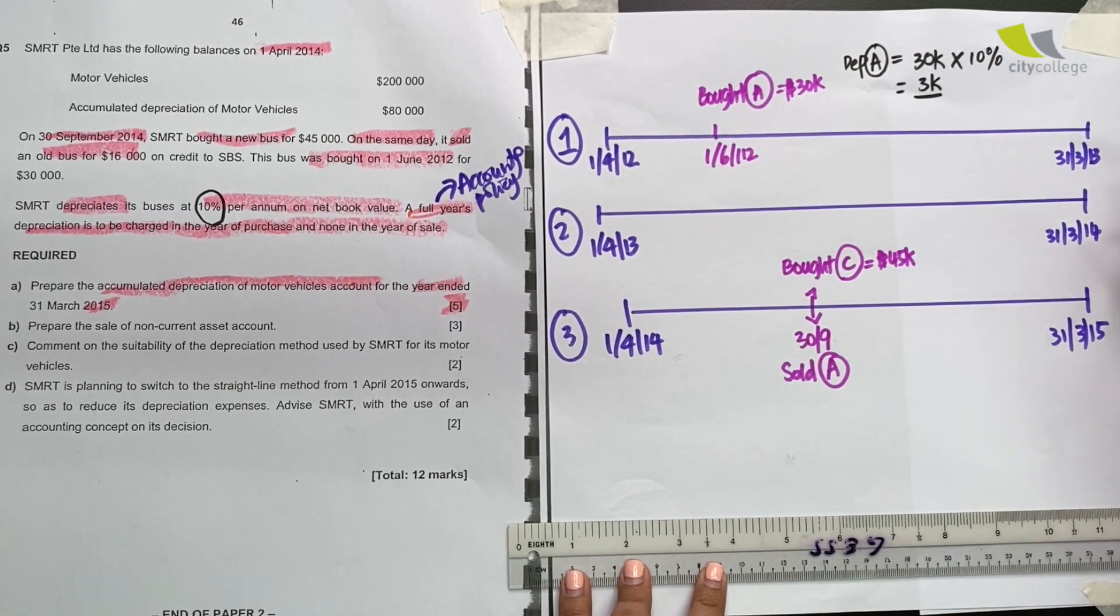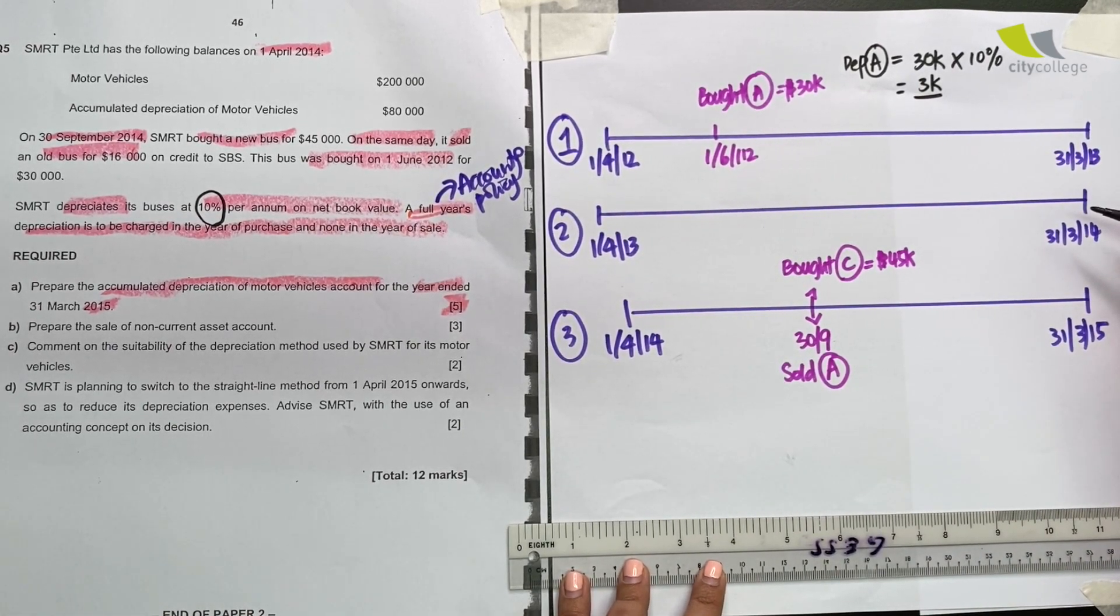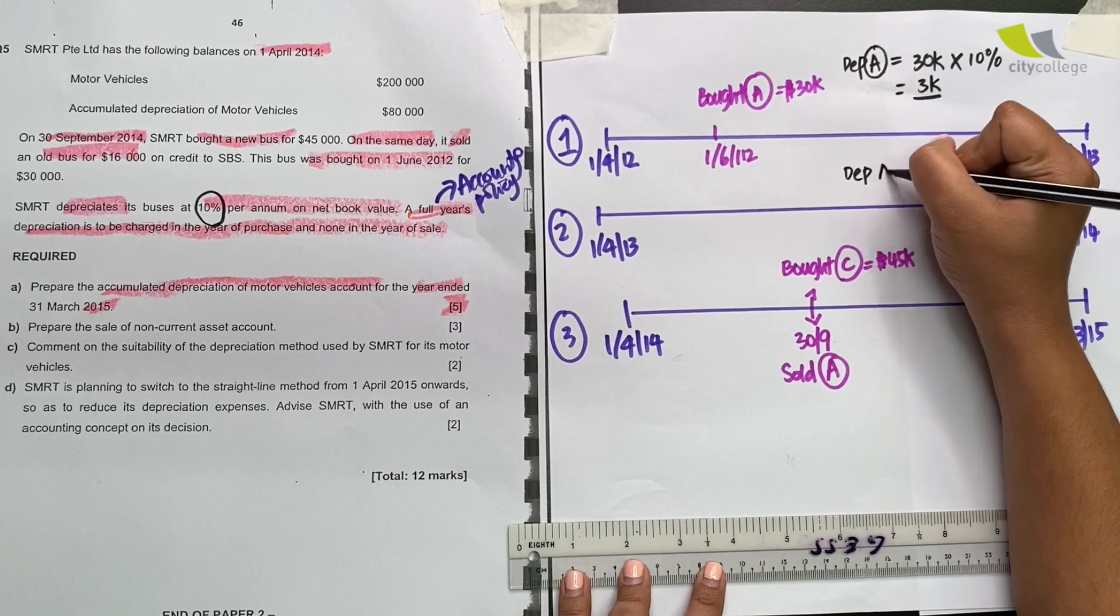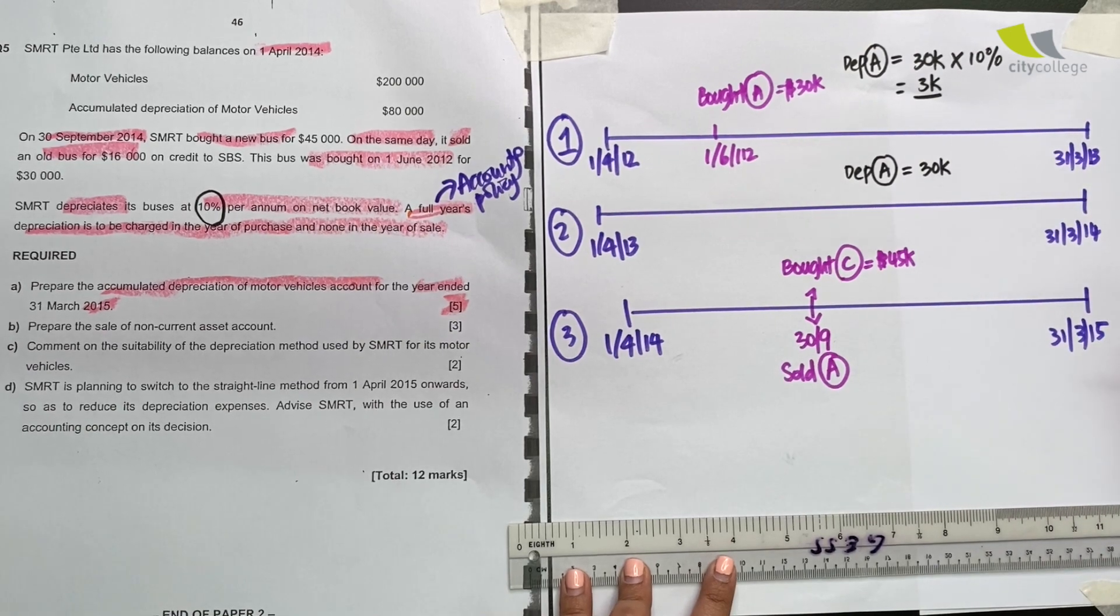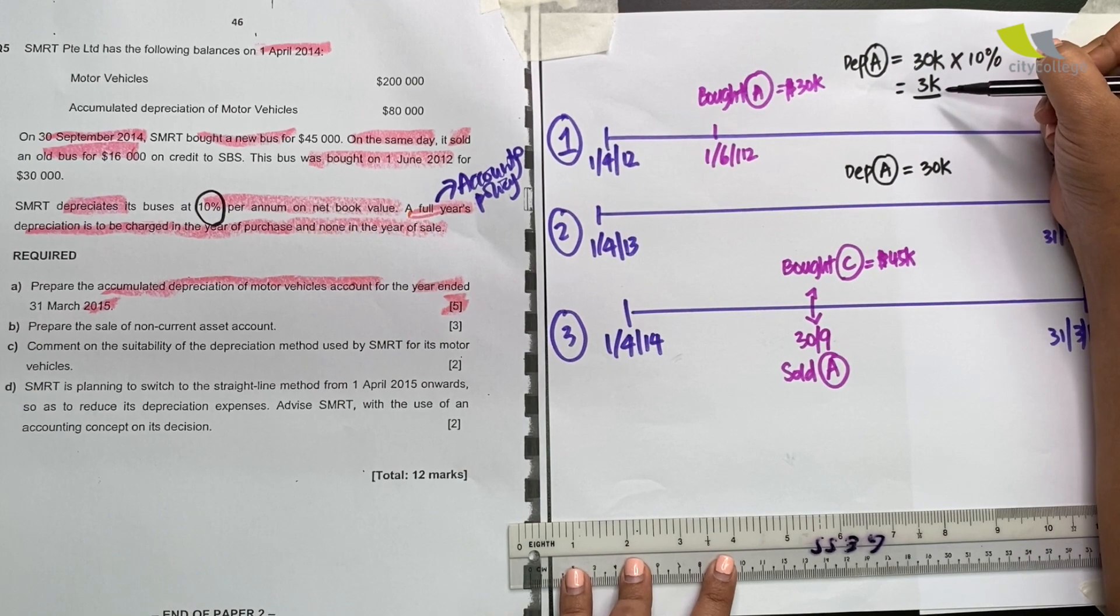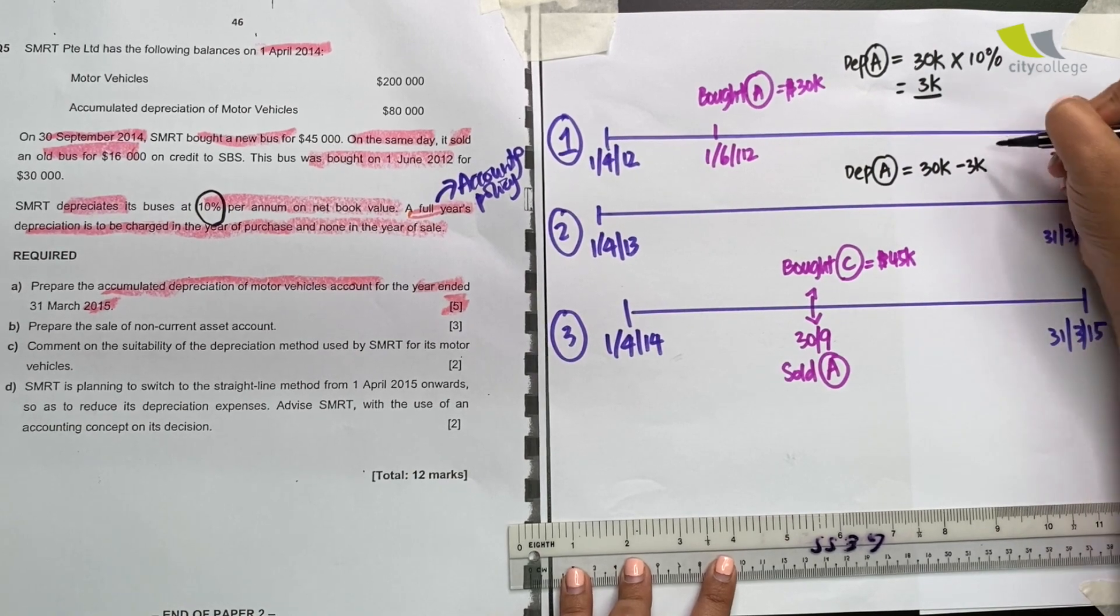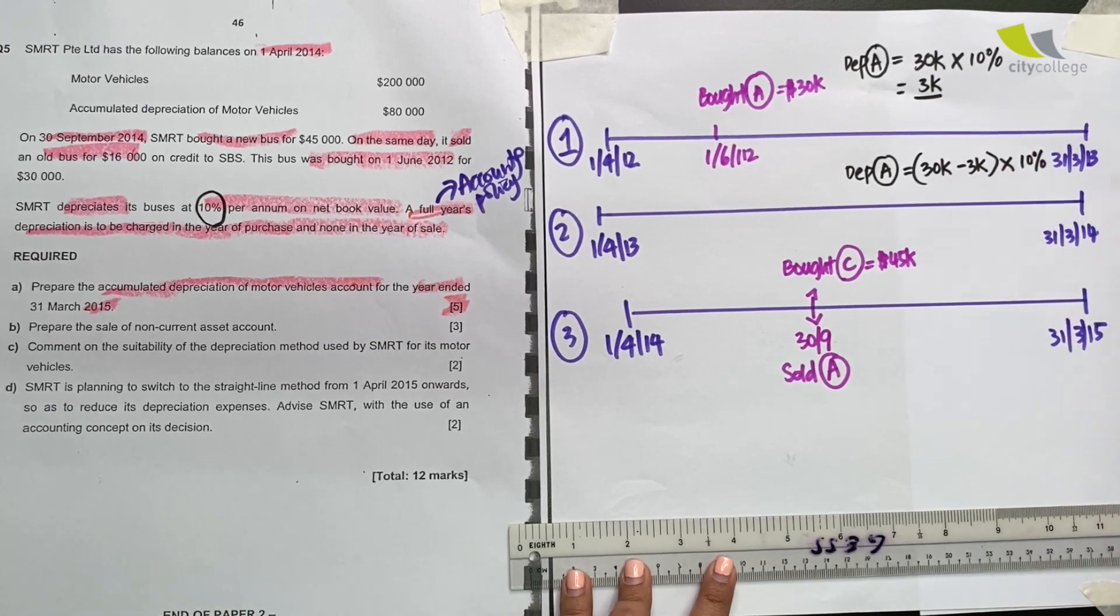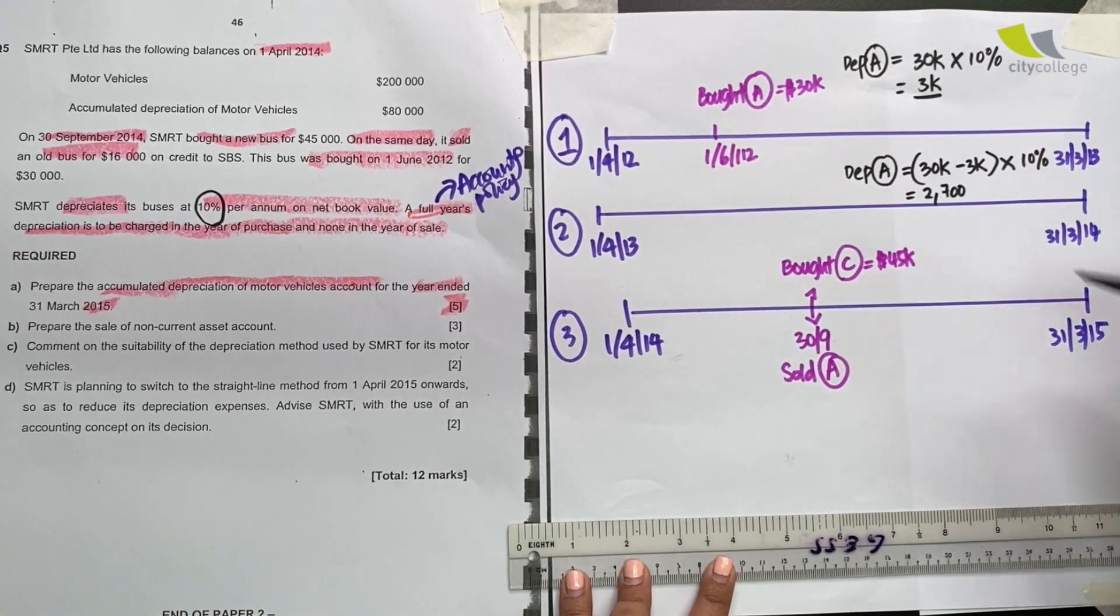Let's move on to the second year. Do I still have A in the second year? I do. The question doesn't say that we sold A in the second year. So we must continue to depreciate A in the second year. A's cost price is still $30,000. But at the second year, it has the first year of loss already calculated. And that is actually the accumulated depreciation. So don't forget to minus the $3,000 which came from the first year. And then I times my percentage given to me. This should give us $2,700 for the second year.